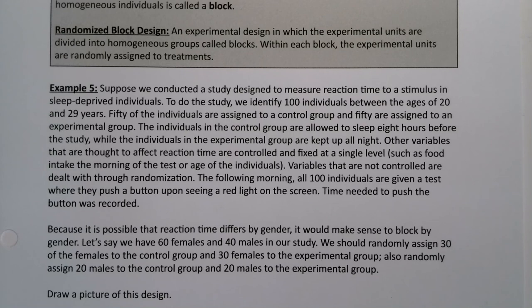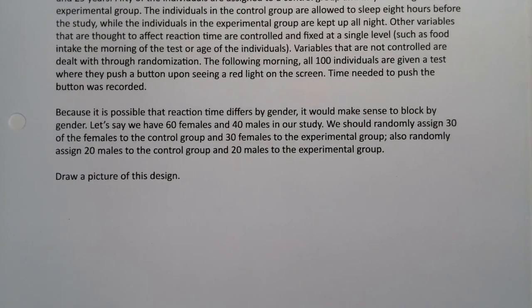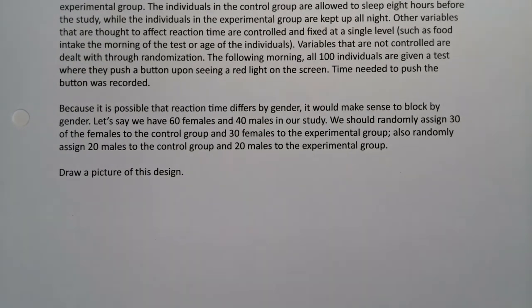The following morning, all 100 individuals are given a test where they push a button upon seeing a red light on a screen, and the time needed to push the button is recorded. Because it is possible that reaction time differs by gender, it makes sense to block by gender. Let's say we have 60 females and 40 males. We should randomly assign 30 females to the control group and 30 females to the experimental group, and also randomly assign 20 males to the control group and 20 males to the experimental group.